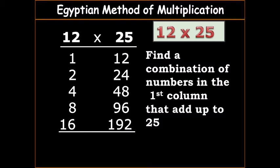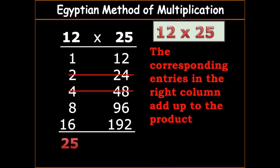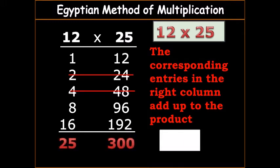So we are going to find combination of numbers in the first column that add up to 25. It shouldn't be more than 25. So take 16 plus 8 is 24 plus 1 is 25. The corresponding entries in the right column add up to the product.